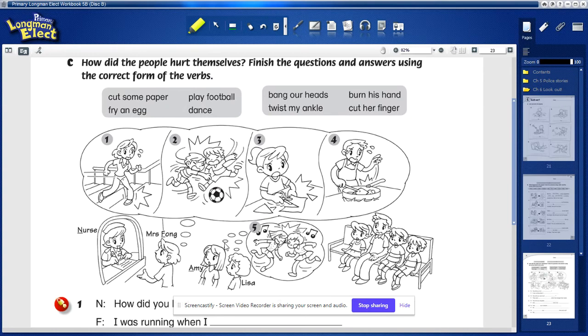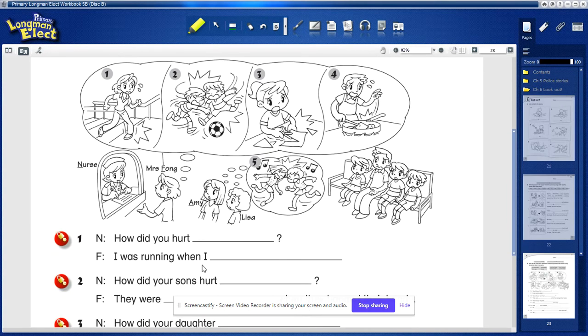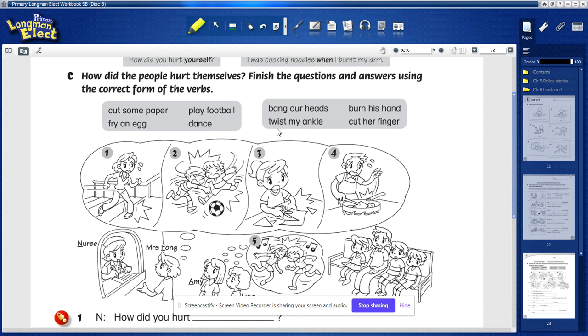Twist my ankle. So you can say, I was running when I twisted my ankle. Please remember to change this word into past tense. The verb, change it into past tense.